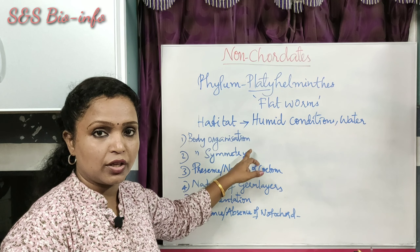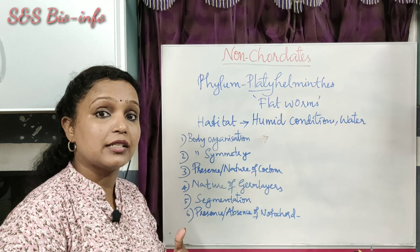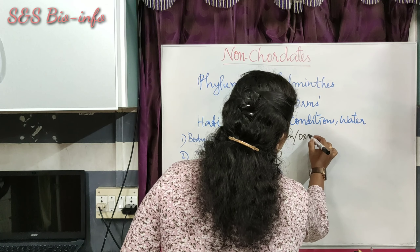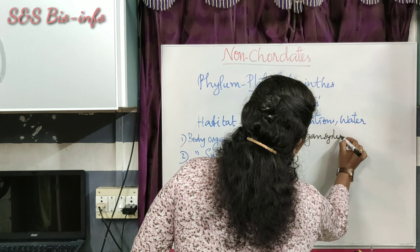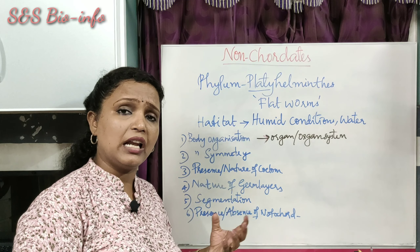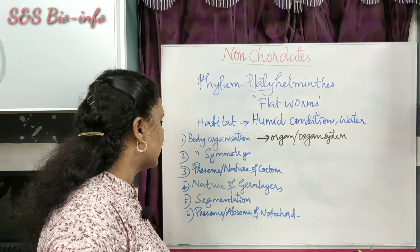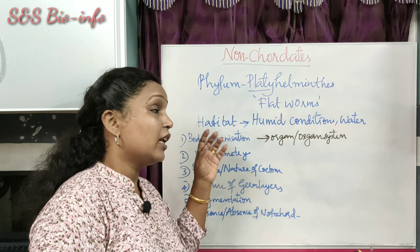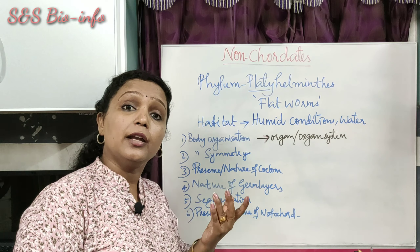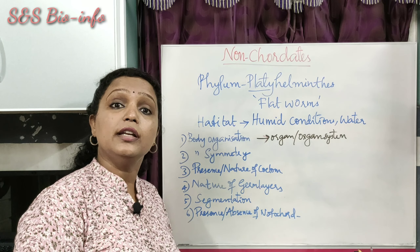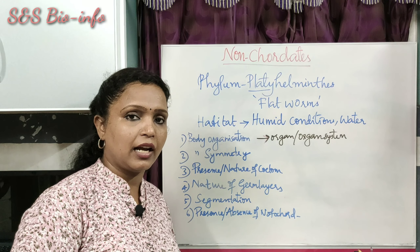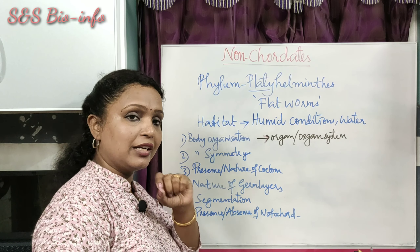First, body organization: Platyhelminthes exhibit organ or organ system level of body organization. They do not have a fully developed organ system like higher animals. Their body symmetry is bilateral — the body can be divided into two identical right and left halves when cut in a vertical plane. So they exhibit bilateral symmetry.